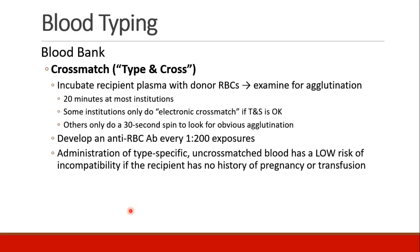The next step is called a cross-match. You take the actual bag of blood you'd like to administer to the recipient, take a sample, and incubate it together with the donor's red blood cells, examining for agglutination. This takes about 20 minutes. You could do an electronic cross-match where you've previously analyzed the donor packet, know its most prevalent antibodies, and have already done a type and screen on the recipient — then you just electronically compare the two for signs of incompatibility. Some places quickly spin them for 30 seconds to check for obvious clumping, while many centers do a formal cross-match with a 20-minute incubation and microscopic examination for agglutination.